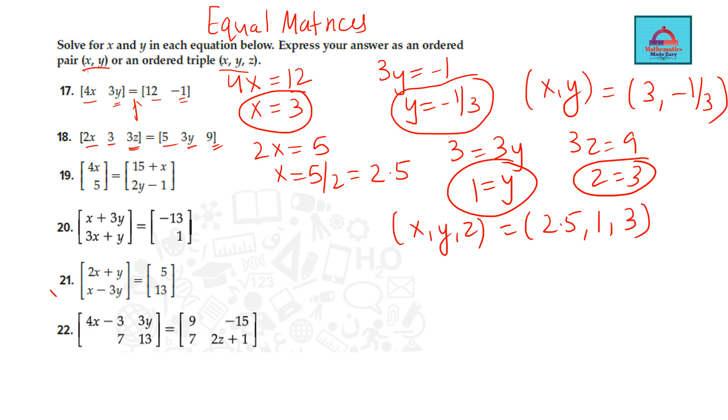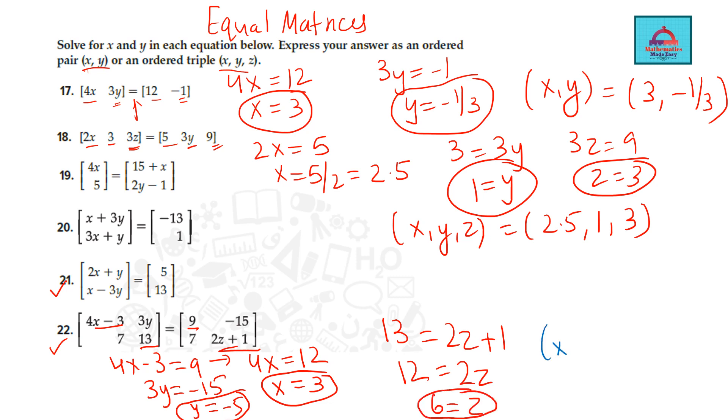Let's do one more. This element is equal to this, means 4x minus 3 is 9. 3y is minus 12, so y is minus 5. From here you may solve for x. Take 3 to the other side, 12. So x is 3. For z you use this point. 13 is equal to 2z plus 1. So 2z is 12 or z is 6.